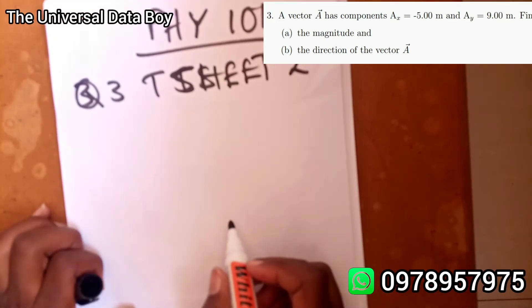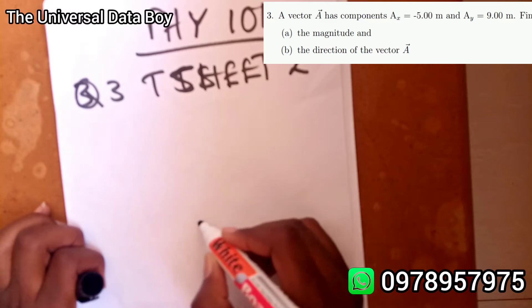The question says a vector A has components Ax = -5.00 meters and Ay = 9.00 meters. Find the magnitude and the direction of the vector A.